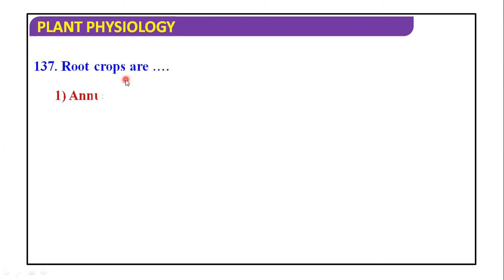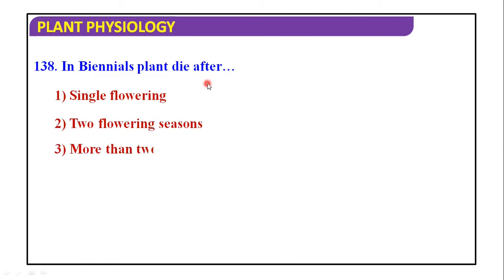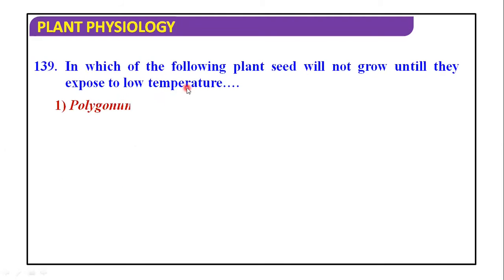Root crops are annual, biennials, perennials, or ephemerals? Answers are biennials. In biennial plants die after single flowering, two flowering season, more than two flowering season or getting pathogenic infection. And the answer is two flowering season. In which of the following plants, seed will not grow until they expose to low temperature? Polygonum, legumes, medium bowl or Nymphaea. Answer is Polygonum.